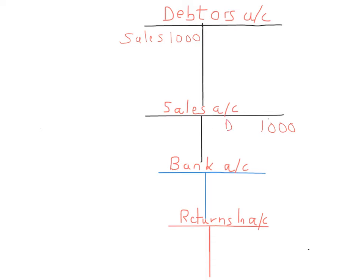There are basically three scenarios that can play out when it comes to a debtor. The first is where your debtor pays you back quicker than expected, or after the three months you'd normally give. The second scenario is where the debtor returns some or all of the goods — perhaps they're faulty, the wrong colour, or wrong type. The third scenario is where the debtor pays very quickly, within a week or two, in which case they'll expect a discount, which we need to deduct from the overall debt.